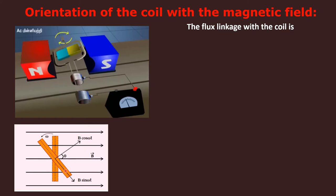The magnetic field is moving along the horizontal direction, and this coil is being rotated along this direction. If this coil is being rotated with an angular velocity omega, then the orientation of the coil also changes.